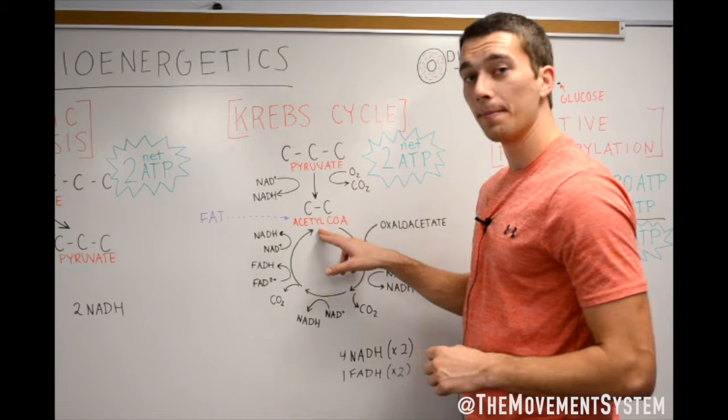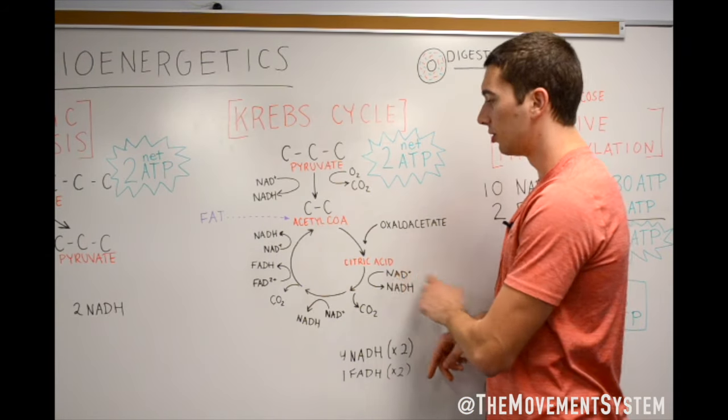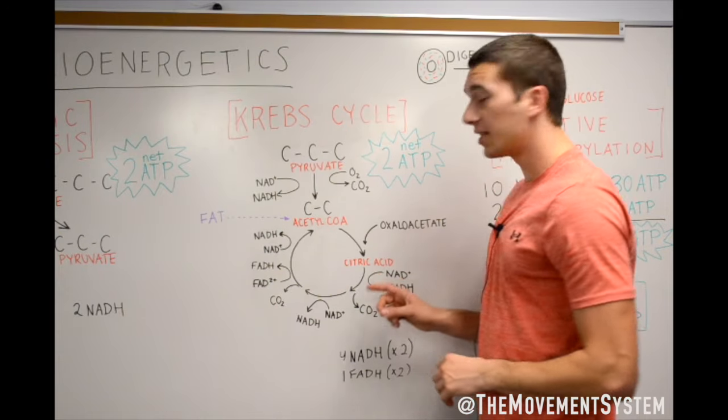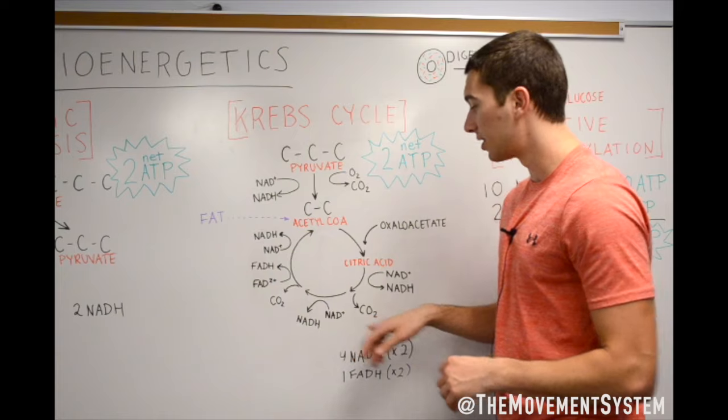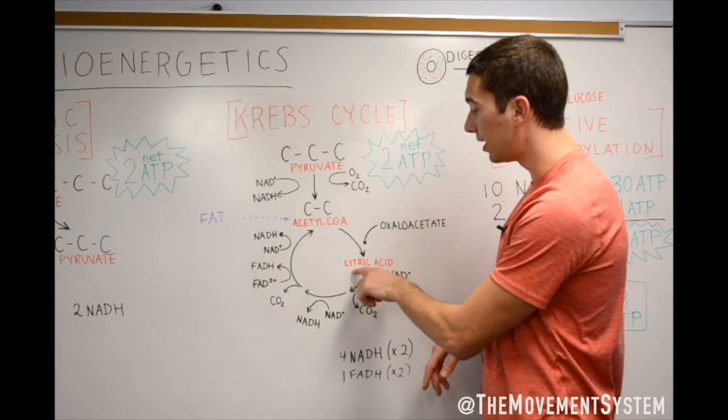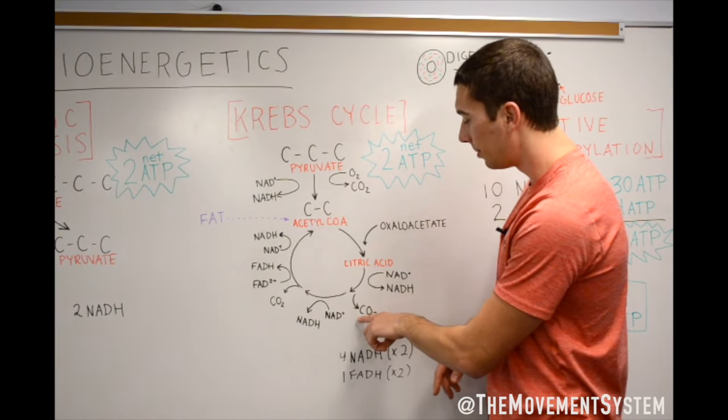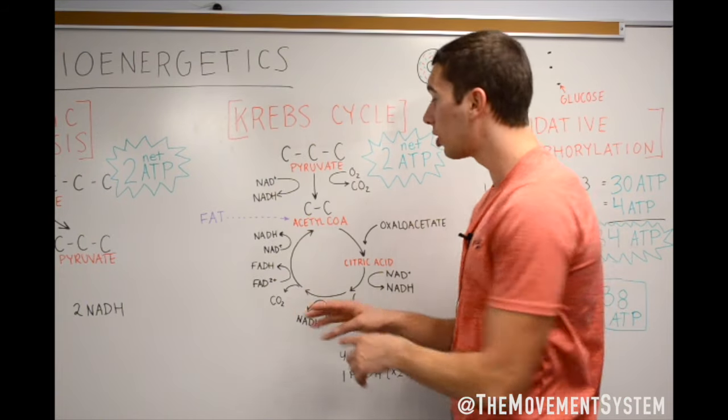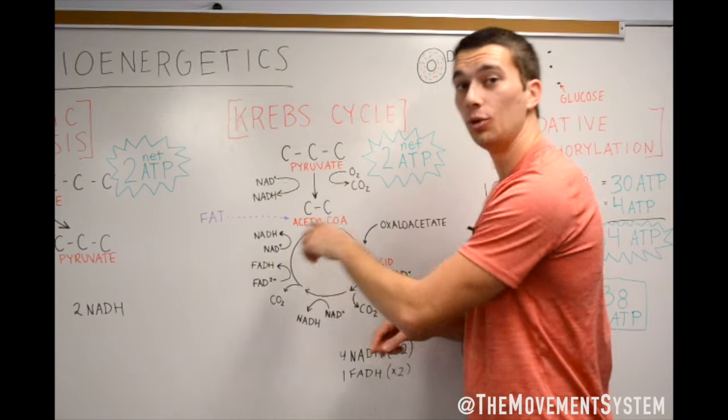We're going to do that a total of three times for one Krebs cycle. So one acetyl-CoA is going to end up with three NADHs. You'll see NADH here, here, and right there. In the process, we're also going to get rid of two carbon dioxides. This was a six carbon. We're going to get rid of two of them. That CO2 here and that CO2 here. That leaves us with a four carbon molecule to come back up and continue around the cycle.